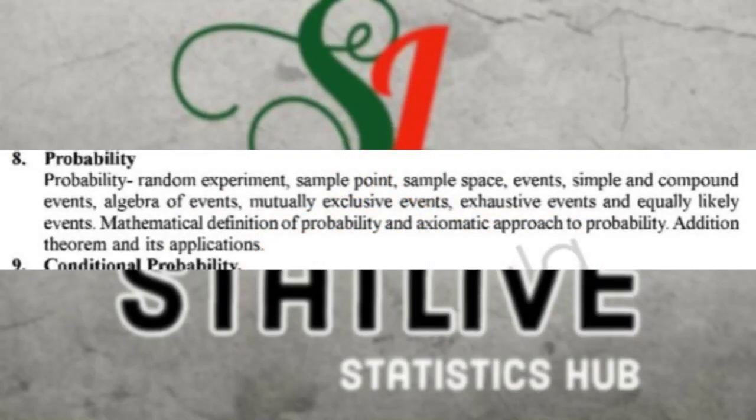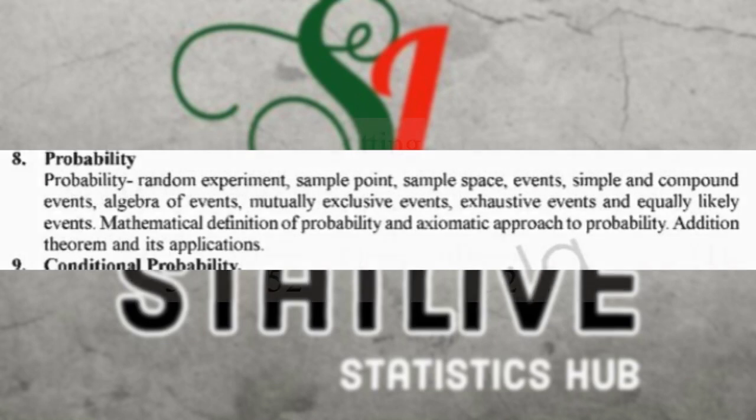I'm going to review the probability experiment. I'm going to review the sample points, sample space, and simple and compound events. We have an algebra of events, mutually exclusive events, exhaustive events, and equally likely events. We have a definition of probability and an axiomatic approach to probability. We have the addition theorem and its application. We will discuss some questions in this area.